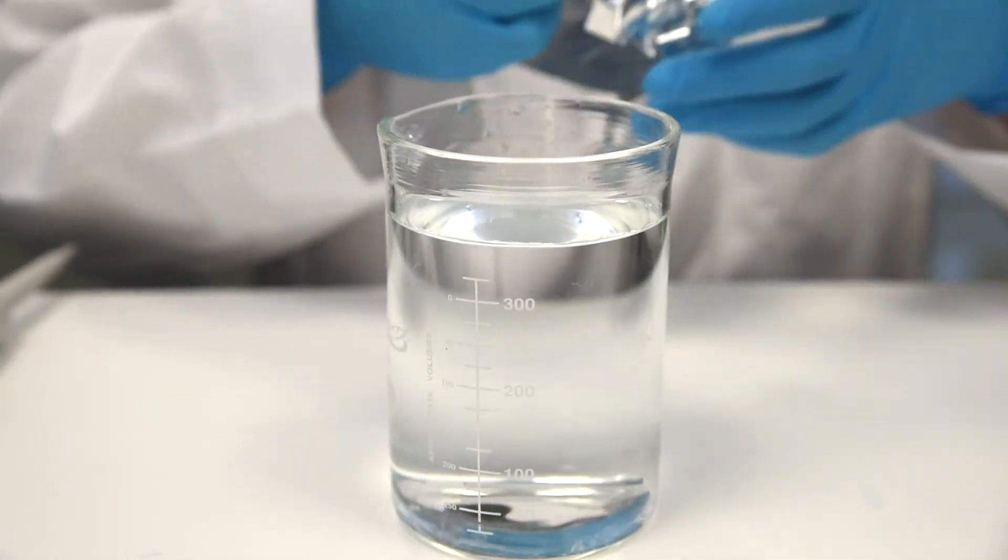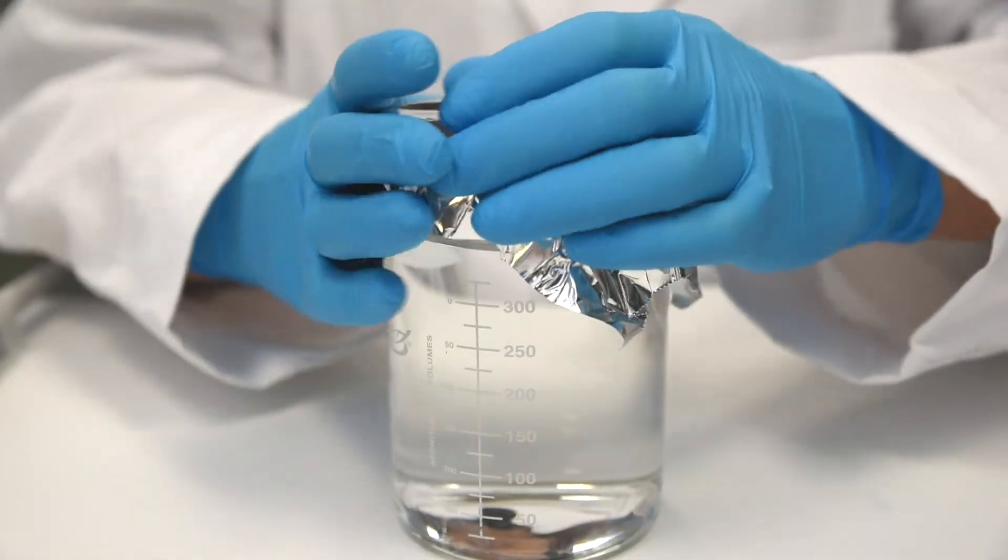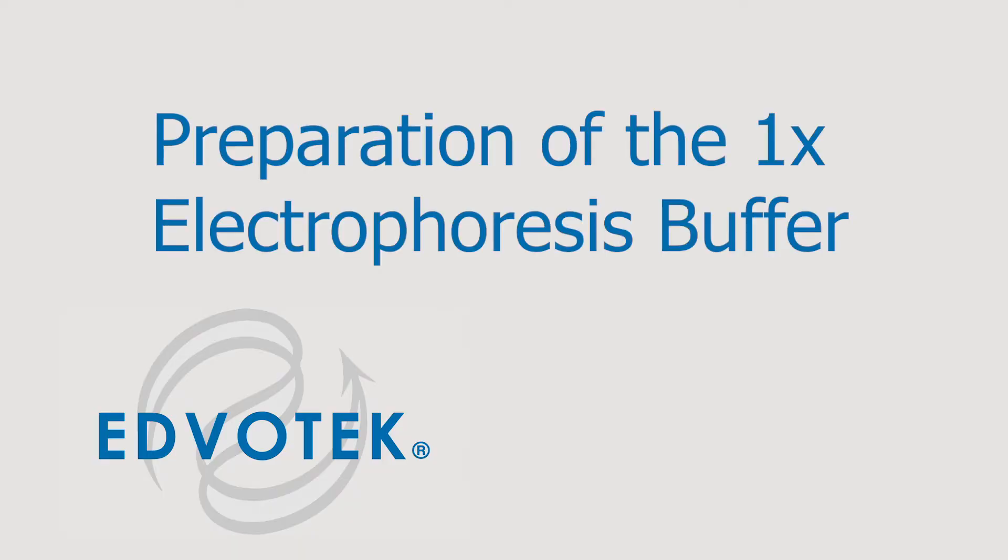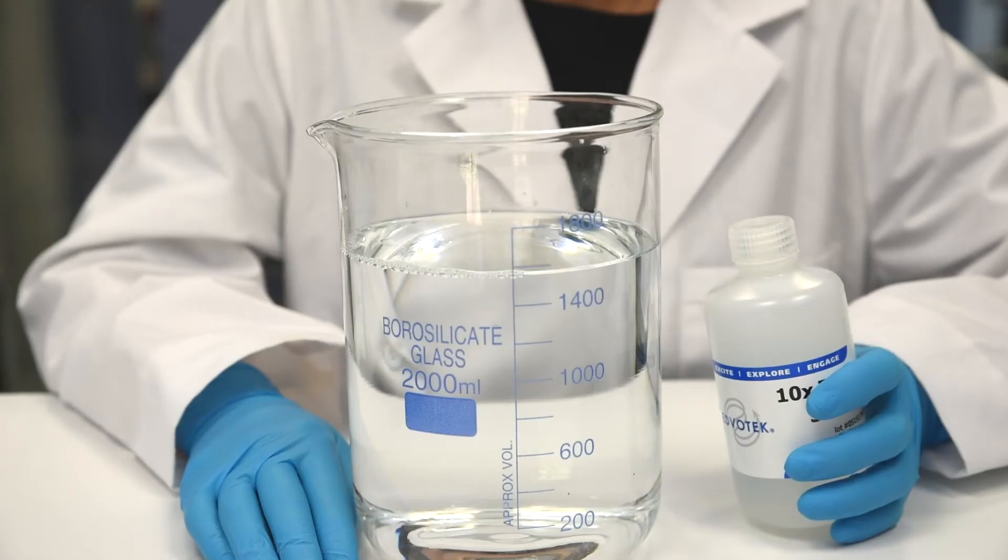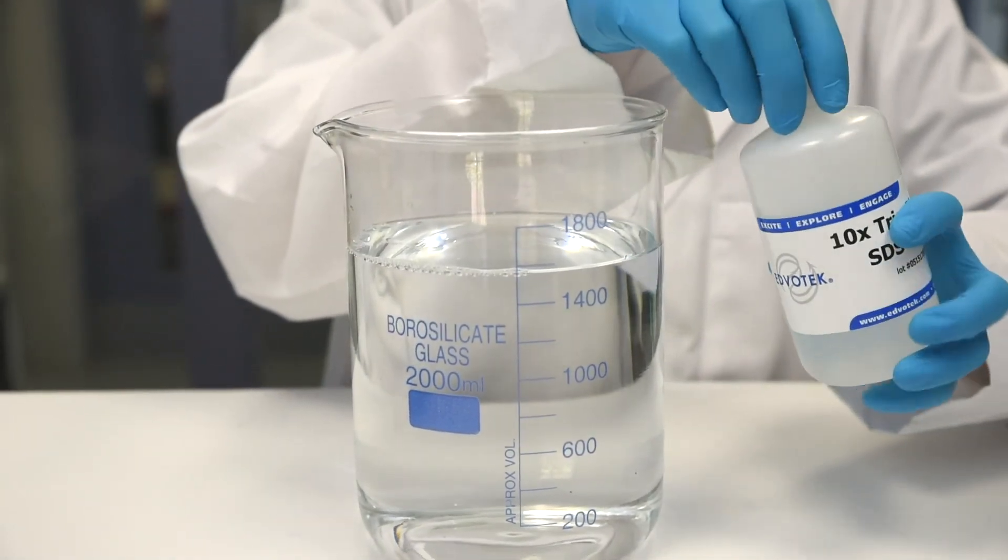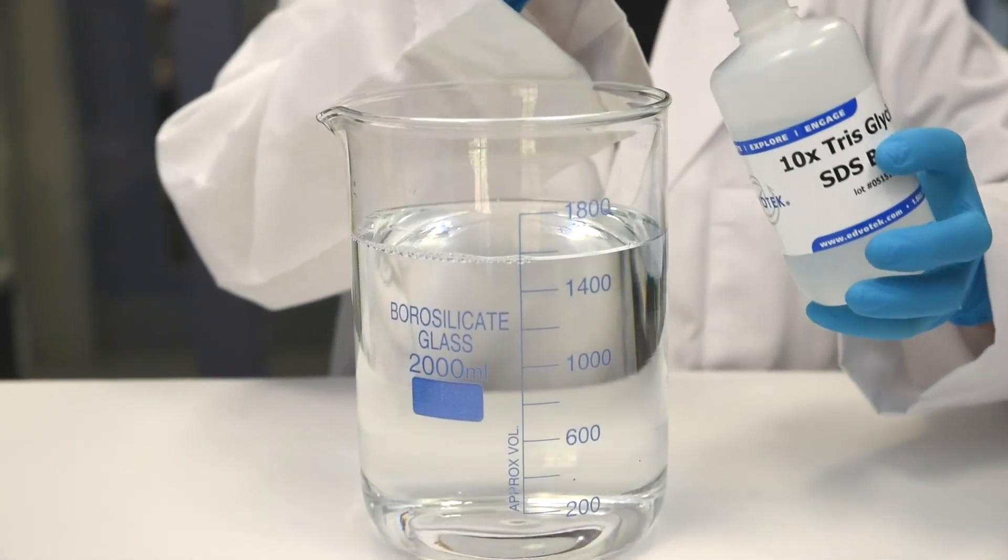Step eight, if desired, preheat beakers of water or a water bath to boiling to save time during the lab. Preparation of the electrophoresis buffer: prepare the electrophoresis buffer by adding and mixing one part of 10x tris glycine SDS electrophoresis buffer to nine parts of distilled water.